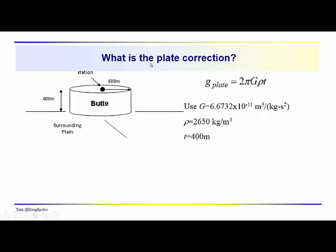Some problems. What would be the plate correction? Well, the plate correction, we're at this elevation, we're up 400 meters. We assume that this is our datum. So we're going to assume that the plate is 400 meters thick. That would be our value of t.